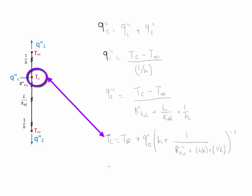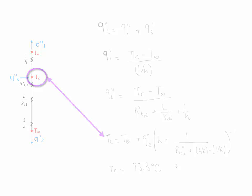Solving this, we find that Tc is equal to 75.3 Celsius. Notice that this value is lower than the maximum allowable value of 85 Celsius. Therefore, for this particular case, the chip will operate properly. Please take the time to go over the calculations and verify these values.